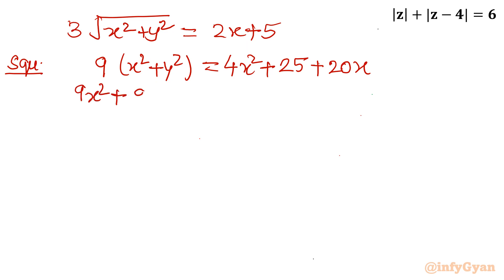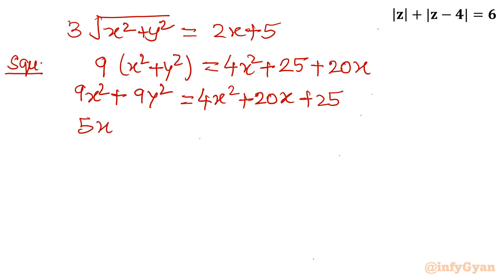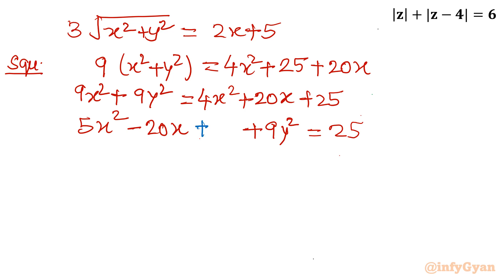Expanding: 9x squared plus 9y squared equal to 4x squared plus 20x plus 25. Bringing all terms to the left-hand side: 5x squared minus 20x plus 9y squared equal to 25. Now I will add 20 to both sides to complete the square on the x terms.